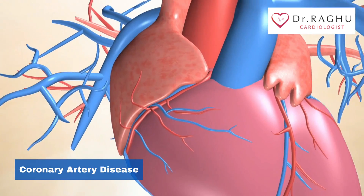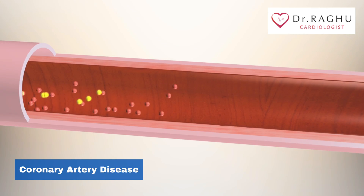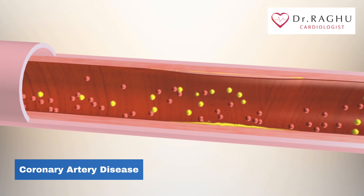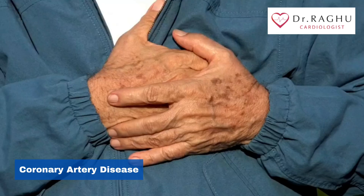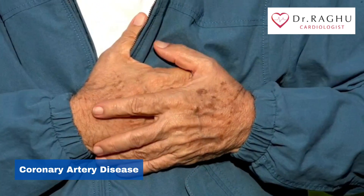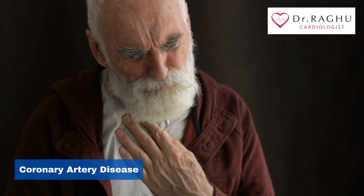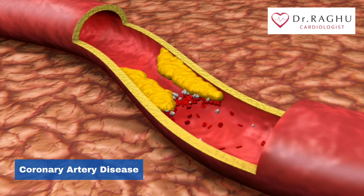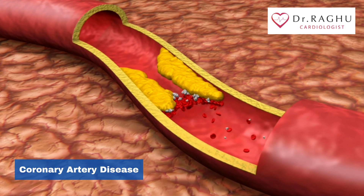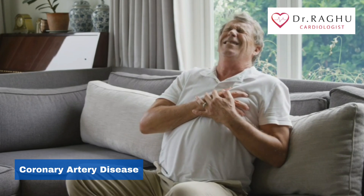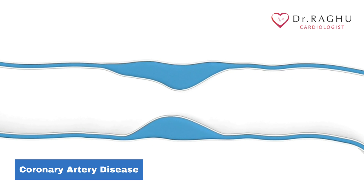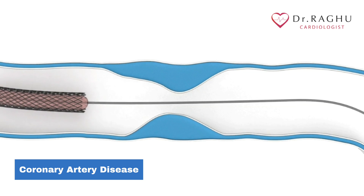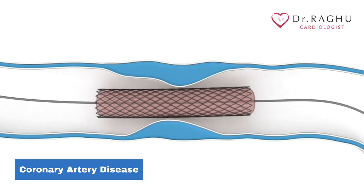When your coronary arteries narrow, your heart may not receive enough blood when demand is greatest, particularly during physical activity, which can cause chest pain or shortness of breath. If a cholesterol plaque ruptures and a blood clot forms, complete blockage of your heart artery may trigger a heart attack. The lack of blood flow to your heart may damage your heart muscle, and the amount of damage depends in part on how quickly you receive treatment.